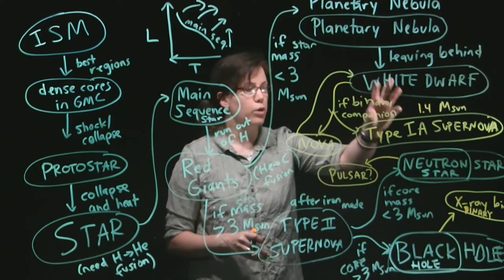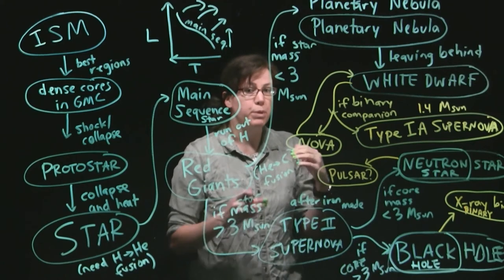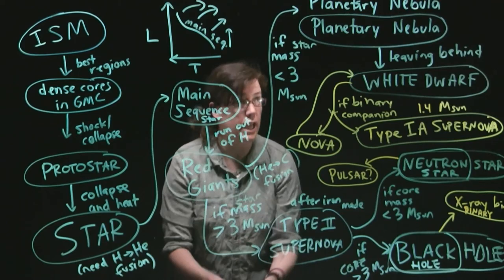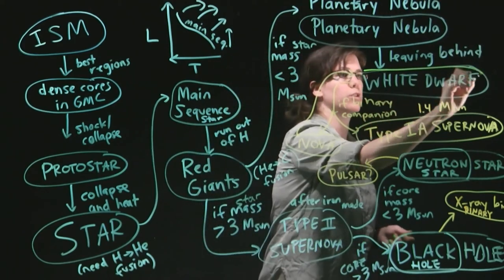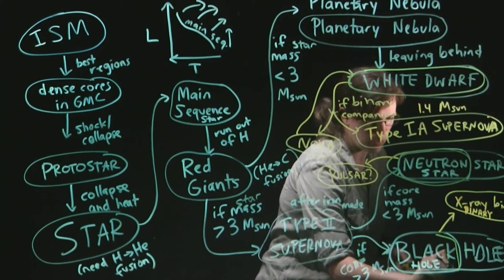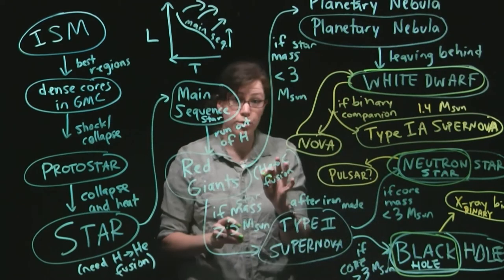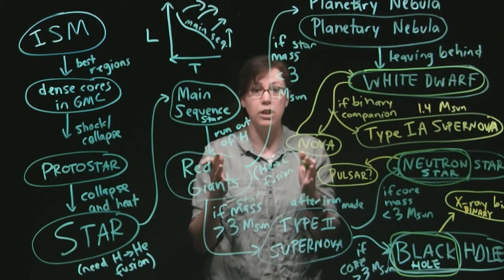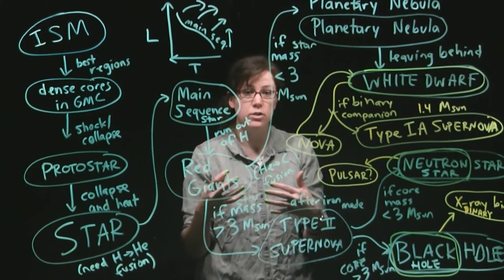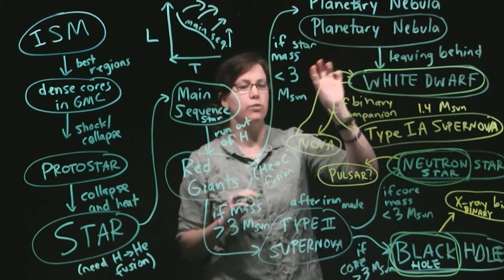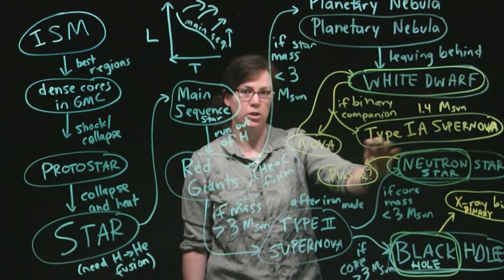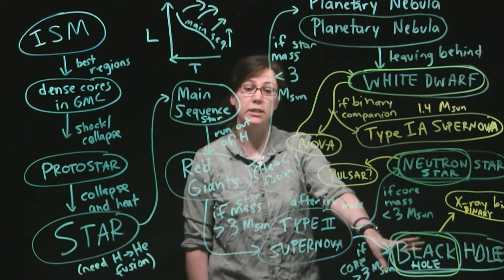So those orange additions are kind of possibilities beyond the end result where it's really important to recognize that those end results, we've got the white dwarf, we've got the neutron star, and we've got the black hole. Those are the three big stellar remnant end results that we can have. And anything beyond that are sort of details of what can happen to a white dwarf or a neutron star or a black hole. The lowest mass stars, medium mass stars, and the very highest mass stars will leave behind a black hole.